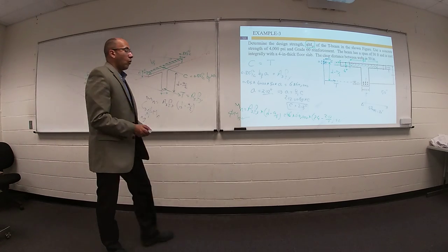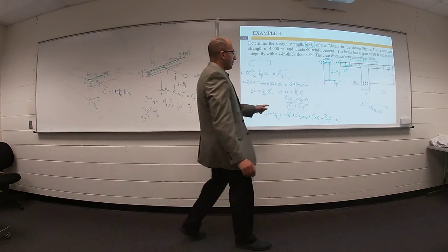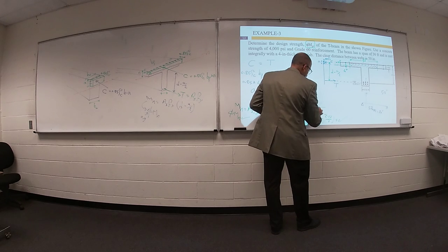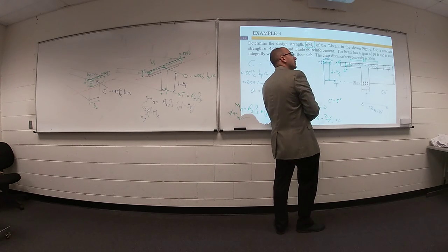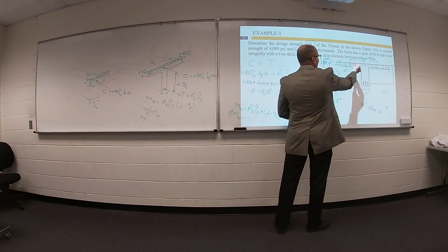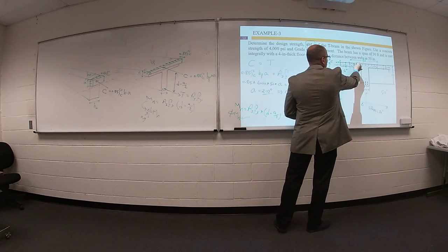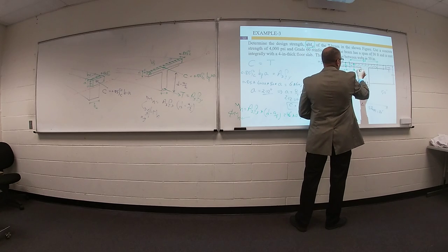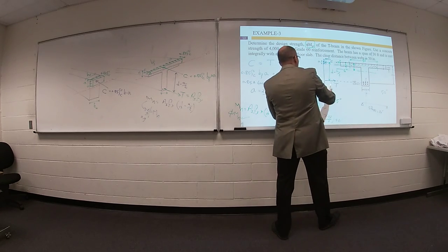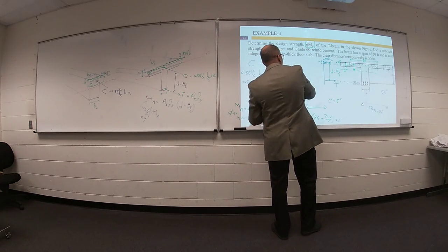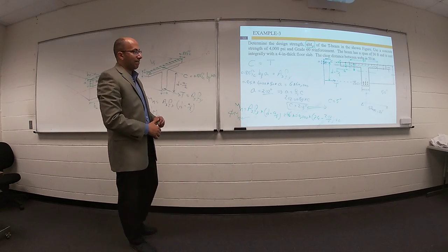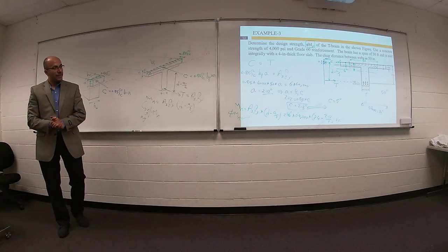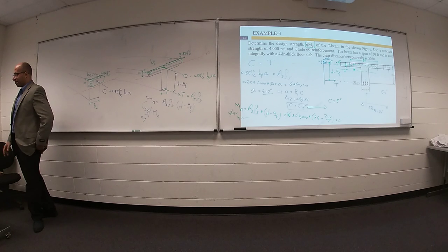One question: what would happen if your C value here equaled 5 inches? That means the neutral axis is at 5 inches depth, and all of your calculations must change to the second situation. Any questions so far?